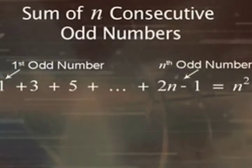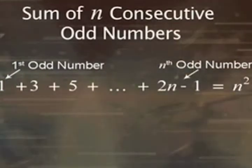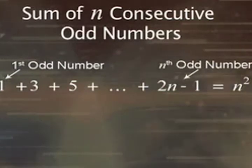Generalizing this pattern, the sum of n consecutive odd numbers equals n squared. Here we have a single square term.